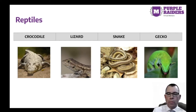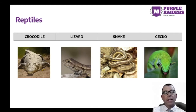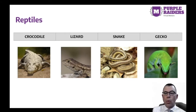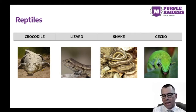The final group of animals with backbones are the reptiles. Reptiles have scales and are cold-blooded. They need sunlight to stay warm and regulate their body temperature. Most reptiles lay eggs. Examples of reptiles include crocodiles, lizards, snakes, and geckos.